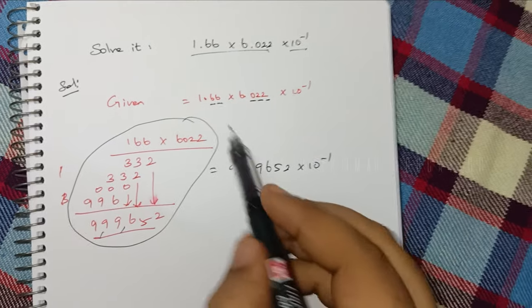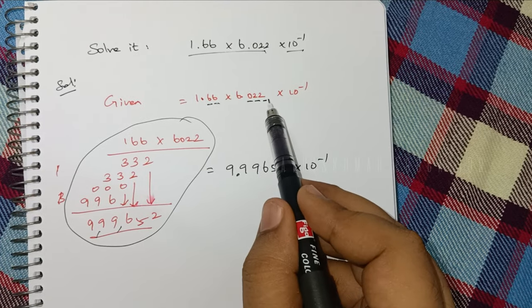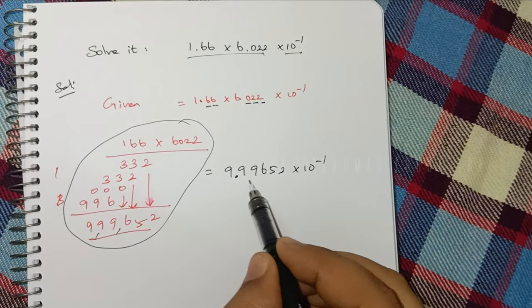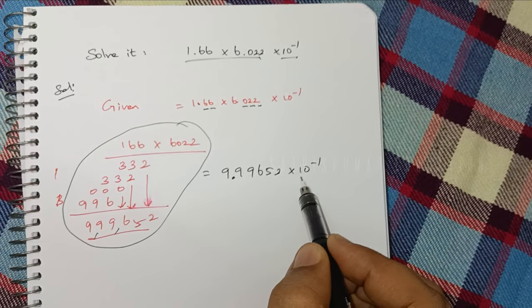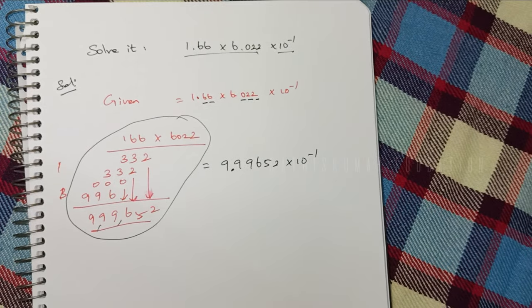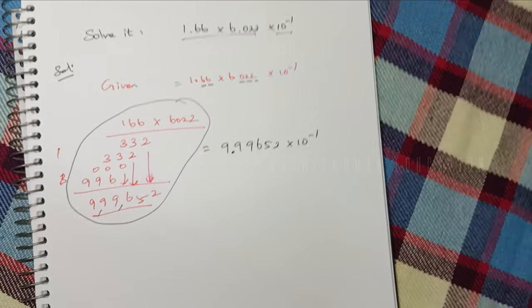So here we have 1.66 × 6.022 equals 9.99652 × 10^-1.